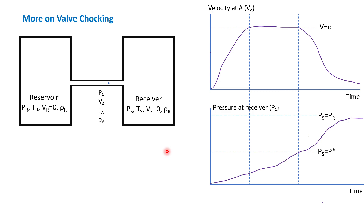So here, imagine we have two reservoirs. The first one is a reservoir with higher pressure — this is the reservoir pressure — and the other one is a container with a lower pressure. We try to transport gas from this reservoir to the receiver.